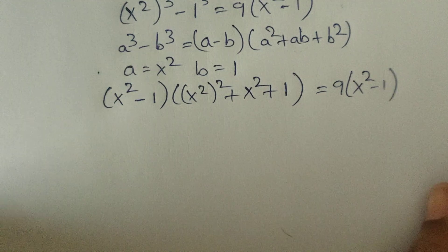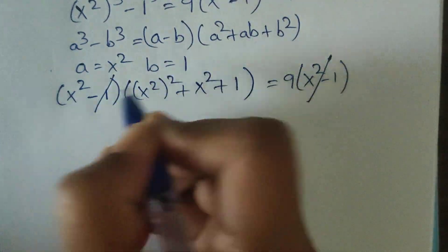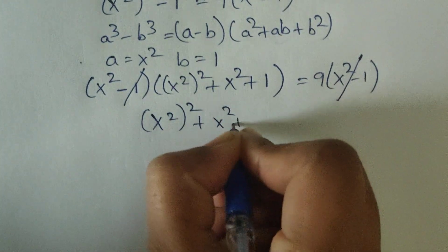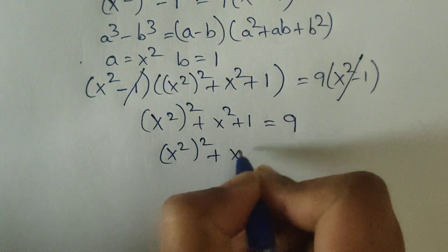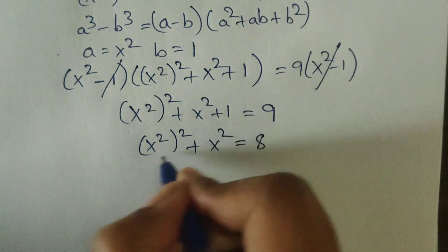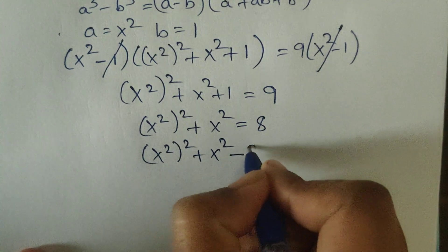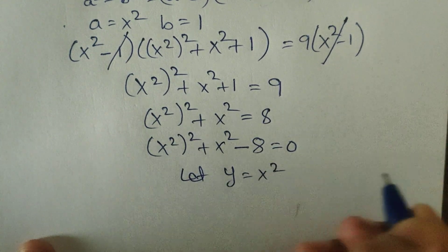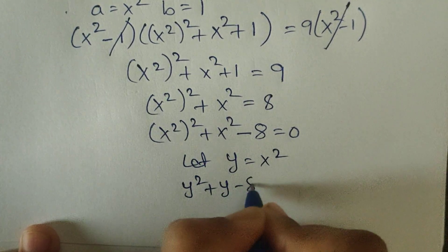So we have x squared minus 1, times x to the power of 4 plus x squared plus 1, equals 9 times x squared minus 1. Here x squared minus 1 appears on both sides and gets cancelled. So now x squared whole to the power of 2, plus x squared plus 1, equals 9. Moving the 1 to the right side gives 9 minus 1 equals 8, and moving the x squared term to the left, we get x to the power of 4 plus x squared minus 8 equals 0. Let y equal x squared, so y squared plus y minus 8 equals 0.